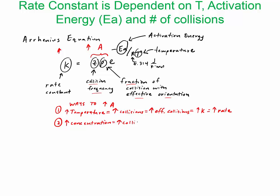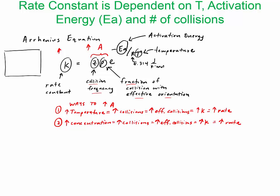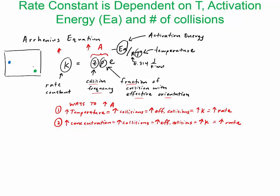Another way to improve collisions of the reacting molecules is to increase the concentration of the reactants. This will increase their collisions, and the number of effective collisions should also increase, which raises the rate constant and the rate. Think of a really large box with super bouncy balls — if there are only one or two bouncing around, the chance they collide is low.